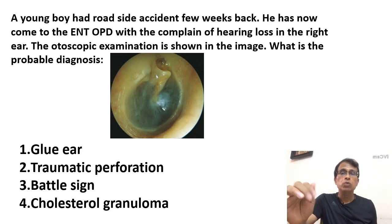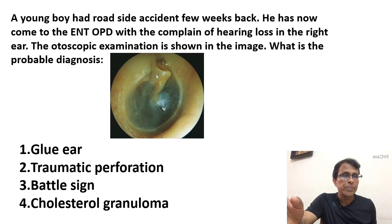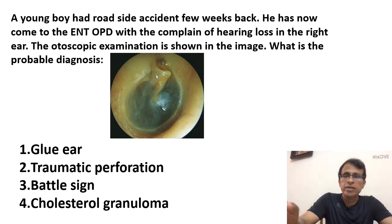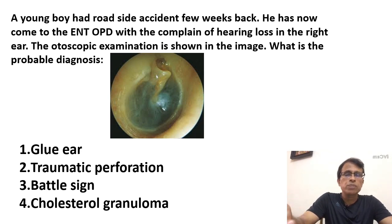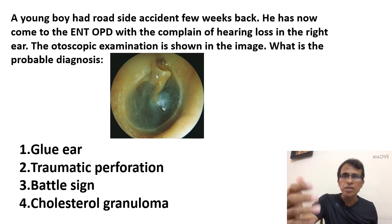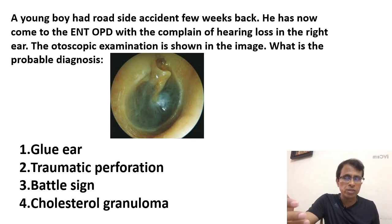Let's see the first question, which says: a young boy had a roadside accident a few weeks back. He has now come to ENT OPD with a complaint of hearing loss in the right ear. The otoscopic examination is shown in the image. What is the probable diagnosis? Is it glue ear, traumatic perforation, battle sign, or cholesterol granuloma? I'll give you a few seconds to think so you can arrive at an answer of your own, then I'll give you the correct answer.